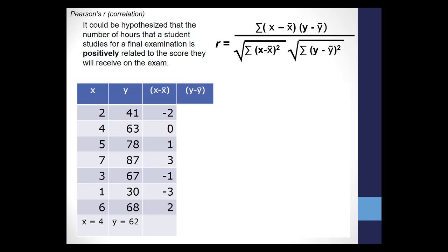Then do the same for y. 41 minus the mean of y, which is 62, equals negative 21. Then 63 minus the mean of y, 62, equals 1, and so on.